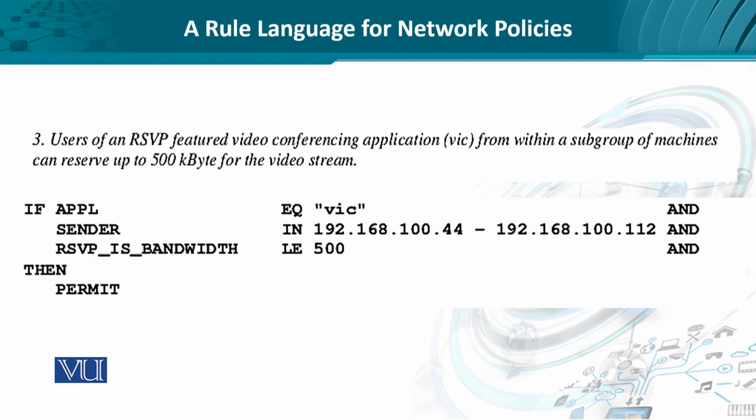The third example concerns resource reservation. If there is a video conferencing application based on the resource reservation protocol — the IETF standard for integrated services architecture — within a subgroup of machines, each group member can reserve up to 500 kilobytes of bandwidth for the video stream. The rule states: if the application equals video conferencing, the sender is within specified IP addresses, and the reservation request is less than or equal to 500 kilobytes, then it should be permitted. These rules are intuitive and human readable.